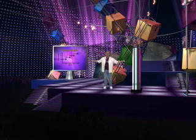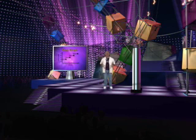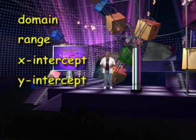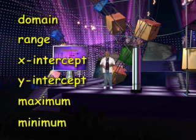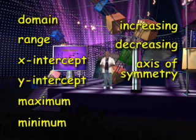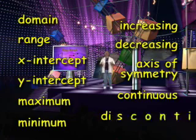So every function has a graph, and every graph — which is a picture of a function — tells a story. We can identify properties of the function from the graph: the domain and range, the x and y intercepts, whether the function has a maximum or minimum, and in which intervals the function is increasing or decreasing. We can find the equation of the axis of symmetry if there is one, and classify the function by its continuity — continuous or discontinuous. And we can do it all with the picture. Bye-bye.